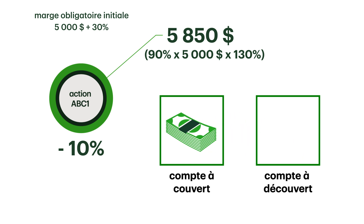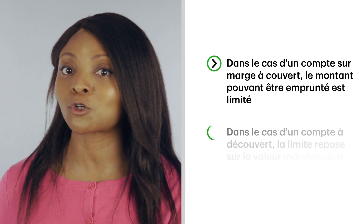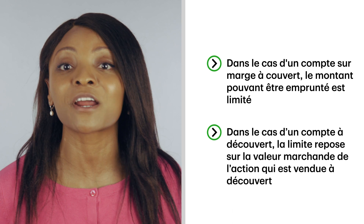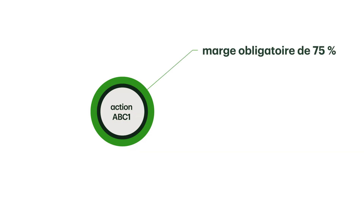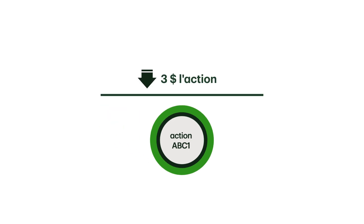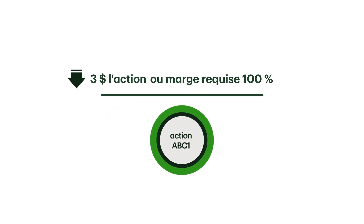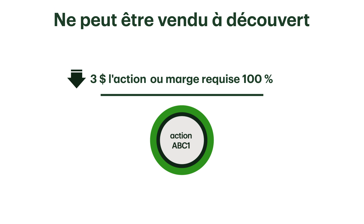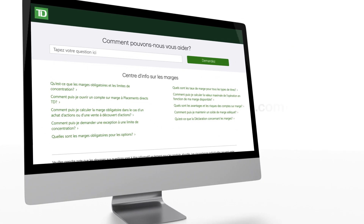There's a limit on how much you can short, just as there's a limit on how much you can buy with margin. Unlike a long margin account where the cap is based off the amount you're borrowing, for a short account the limit is based off the market value of the stock you're shorting. For example, a stock with a seventy-five percent margin requirement only allows you to sell fifty thousand dollars worth of the stock. Any stock trading under three dollars a share or that has a hundred percent margin requirement can't be shorted — check out the short concentration guidelines for details.